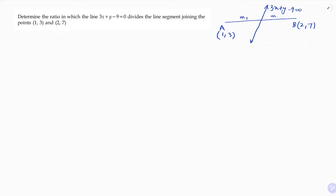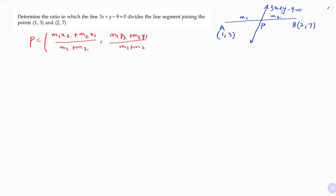If we take the ratio as m1 and m2, I will find the point where the line cuts segment AB using the section formula. The section formula gives the coordinates as: m1·x2 plus m2·x1 by m1 plus m2, and m1·y2 plus m2·y1 by m1 plus m2.